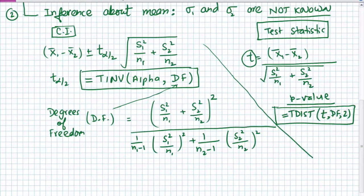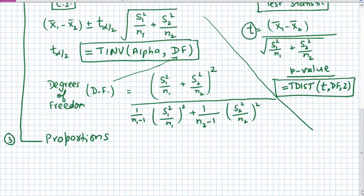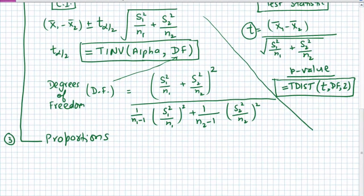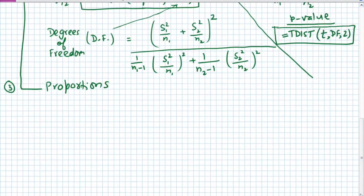The third situation, as we discussed in earlier chapters, is proportions. For proportions I will only write the confidence interval formula, and as before we use the normal distribution for proportions as well.